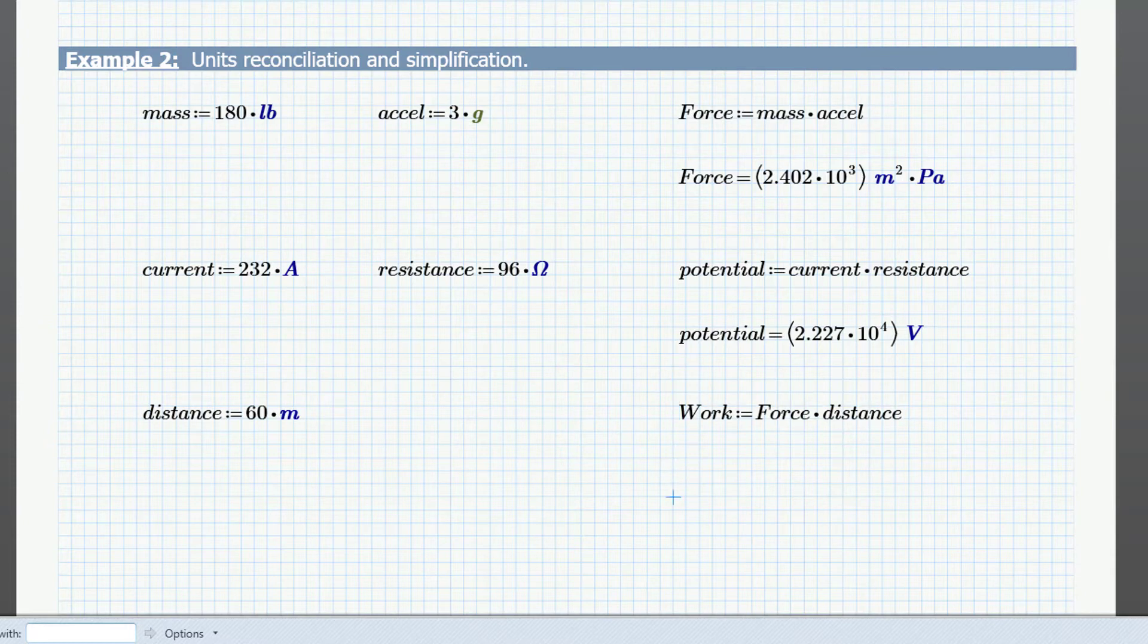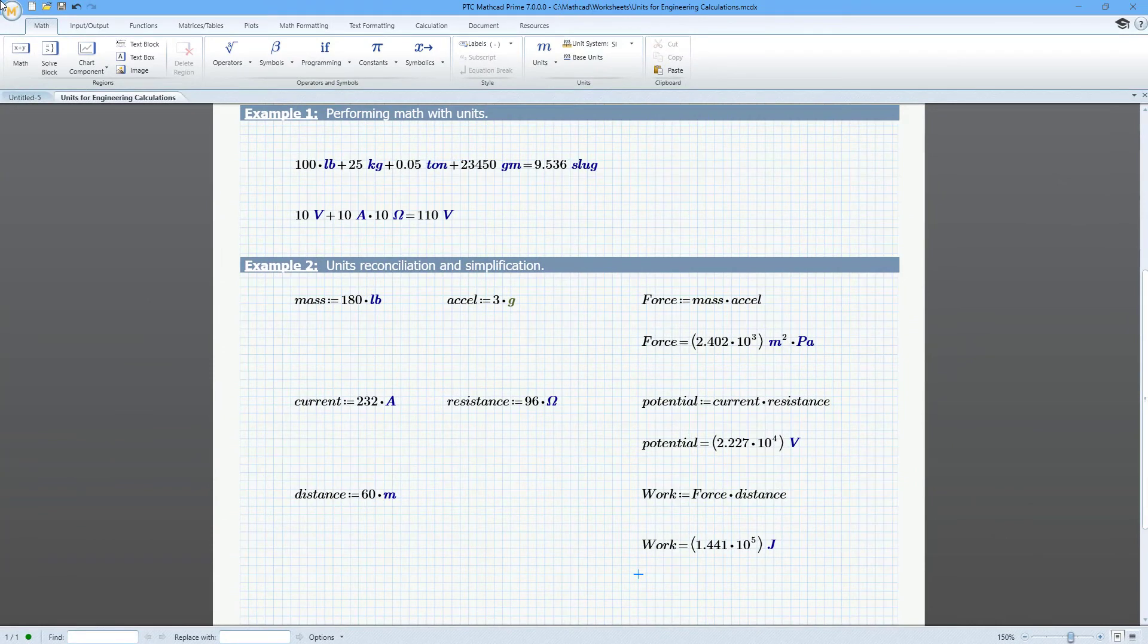When we multiply force and distance, the result is automatically reconciled to energy units. Use the base units command in the ribbon to turn off units simplification and report the result in the worksheet's base units.